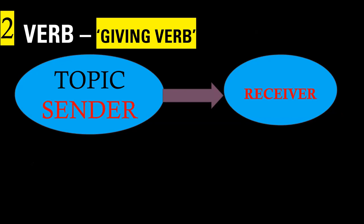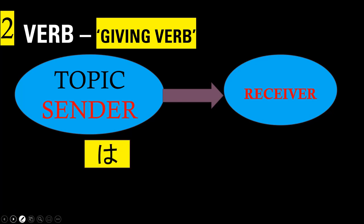For subtopic number two — giving and receiving statements — I want you to recap the vocabulary. There are giving verbs and receiving verbs. For giving verbs, you must internalize that a particle marks the sender and another particle marks the receiver. The topic marked by 'wa' is the main star — the person the statement is about, the main actor. The second person you see would be the supporting character marked by 'ni.'